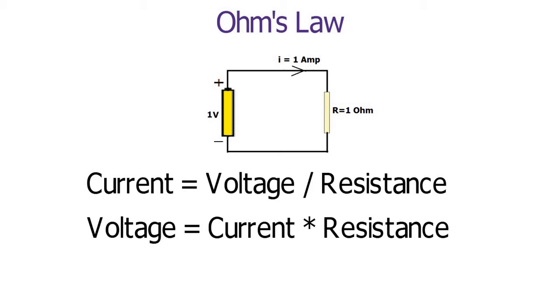Voltage equals current times resistance. 1 volt is the potential difference across a 1 ohm resistance that has 1 ampere of current through it.